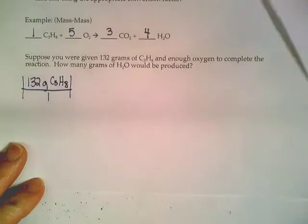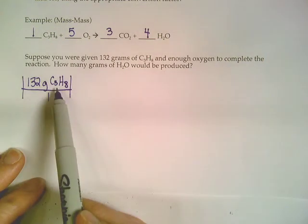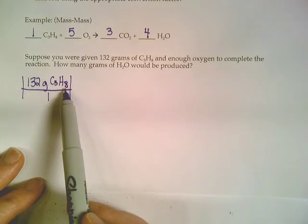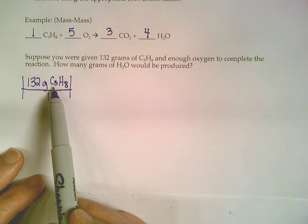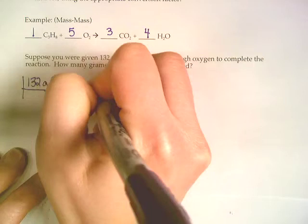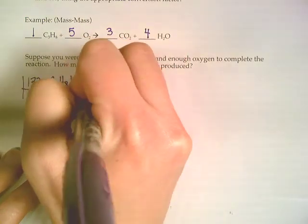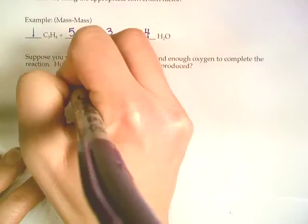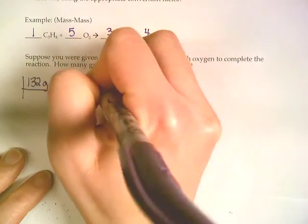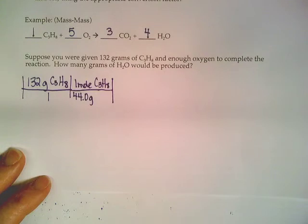So if you were to look at a periodic table and get the masses of carbon and hydrogen, each carbon has a molar mass of 12 and each hydrogen has a mass of 1. So if we add up 3 carbons and 8 hydrogens, that would have a molar mass of 44 grams per mole. I'm going to put that 44 on the bottom and the 1 mole on the top, so that way my grams and grams can cancel out.